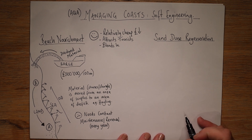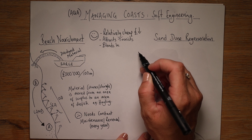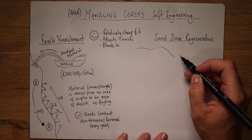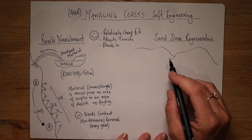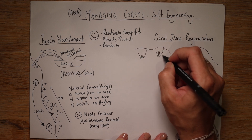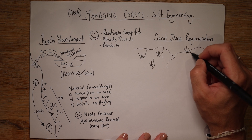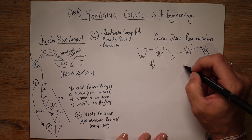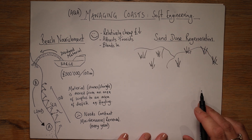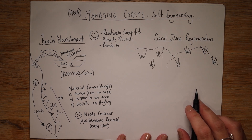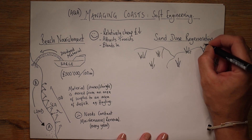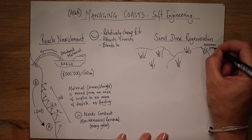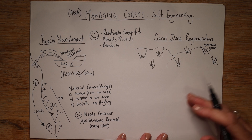Moving on to sand dune regeneration. The best thing here is to just draw a couple of wonky sand dunes. Sand dunes have this kind of marram grass — if you've ever walked on a sand dune, you'll know what I'm talking about. They're kind of spiky, quite tall grasses that can come up past your knees. It's called marram grass.